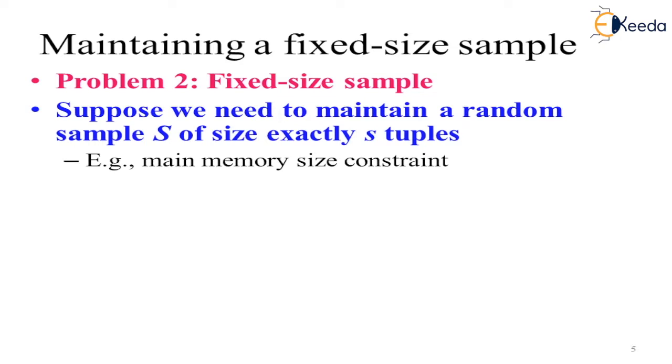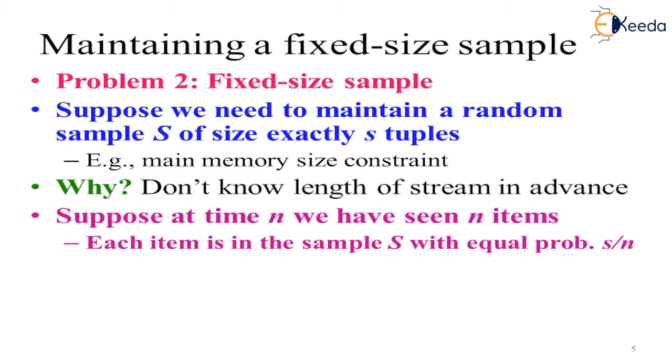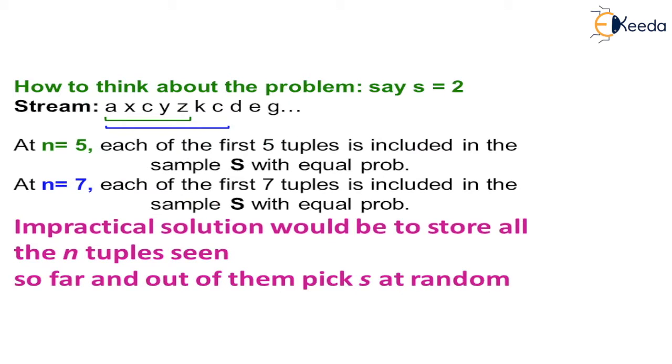Second problem is fixed size sampling. Suppose we need to maintain a random sample S of size exactly S tuples. So we have main memory problem. We cannot store everything. So what we are going to do? We will take randomly from that and store it. Why? Don't we know the length of stream in advance? No, we don't know the length of the stream in advance. Suppose at time N, we have seen N items. Each item in the sample S with equal probability S by N. So how we are going to work it? Let's understand by some example.